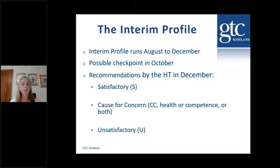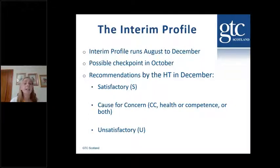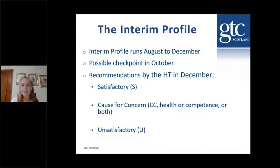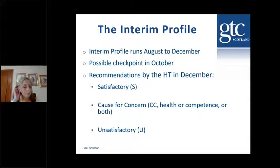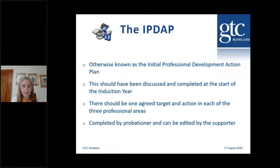December is quite late for somebody to hear that they're actually a cause for concern, so we're going to do a quick checkpoint in October — just an A4 sheet returned to your local authority and sent on to us. It's all about highlighting who needs support. The interim profile runs August to December, and in December the recommendation is made by the head teacher: either satisfactory, cause for concern for health or competence, or unsatisfactory.